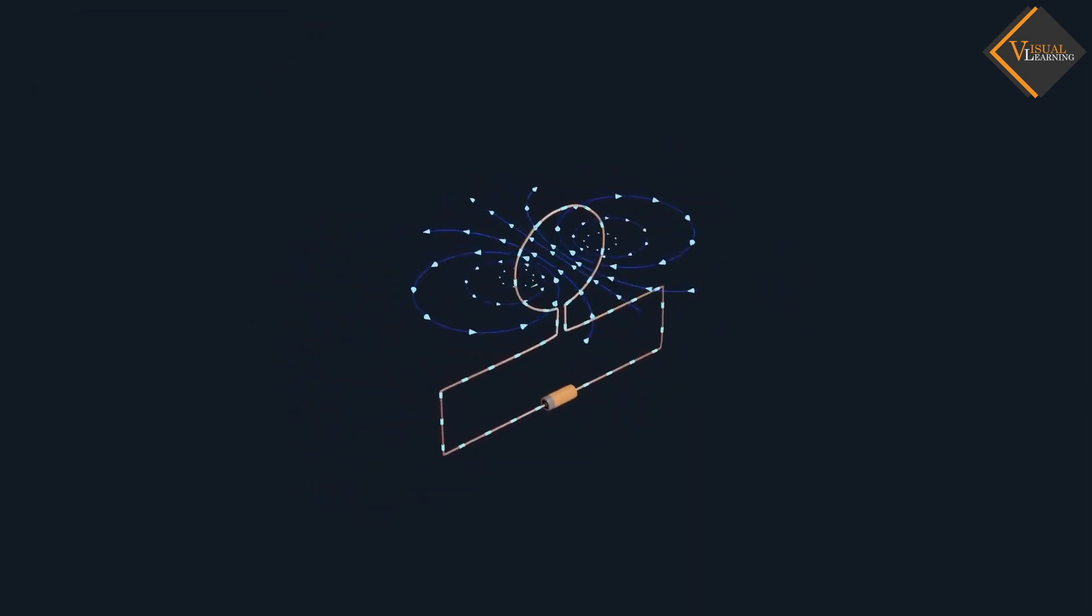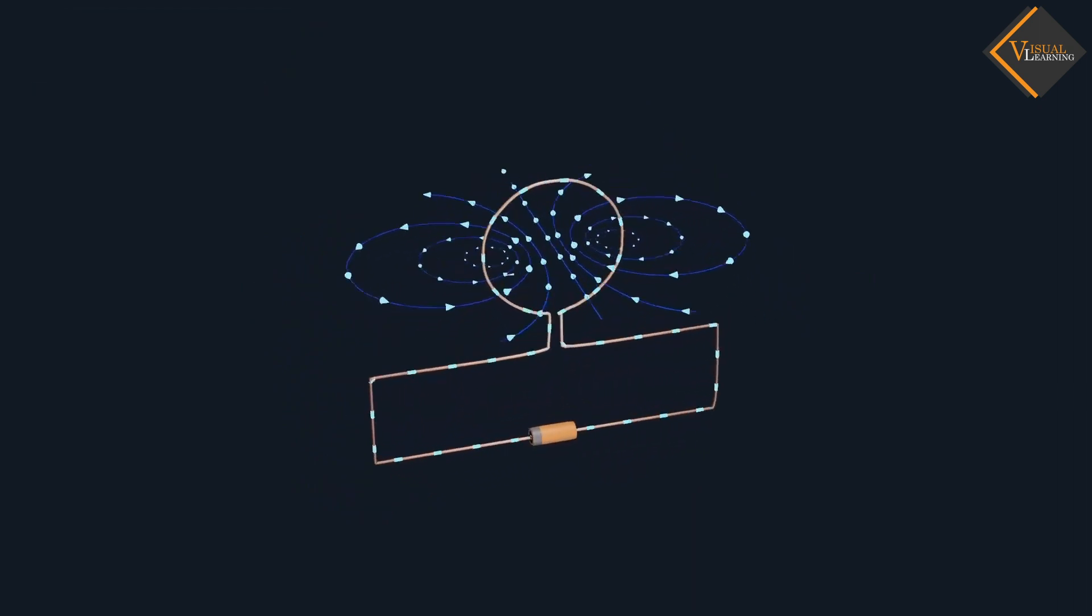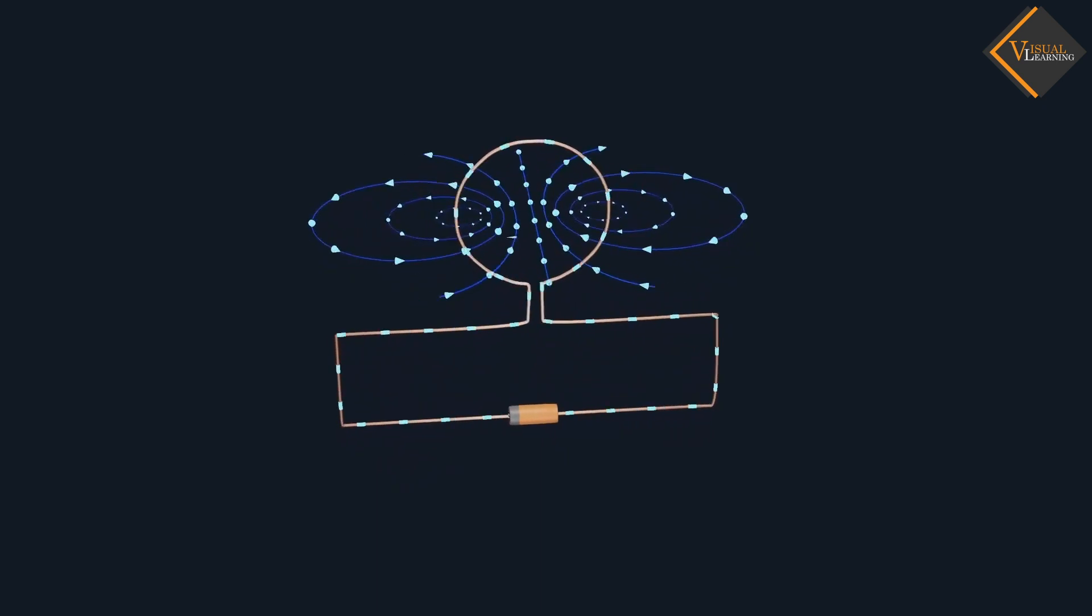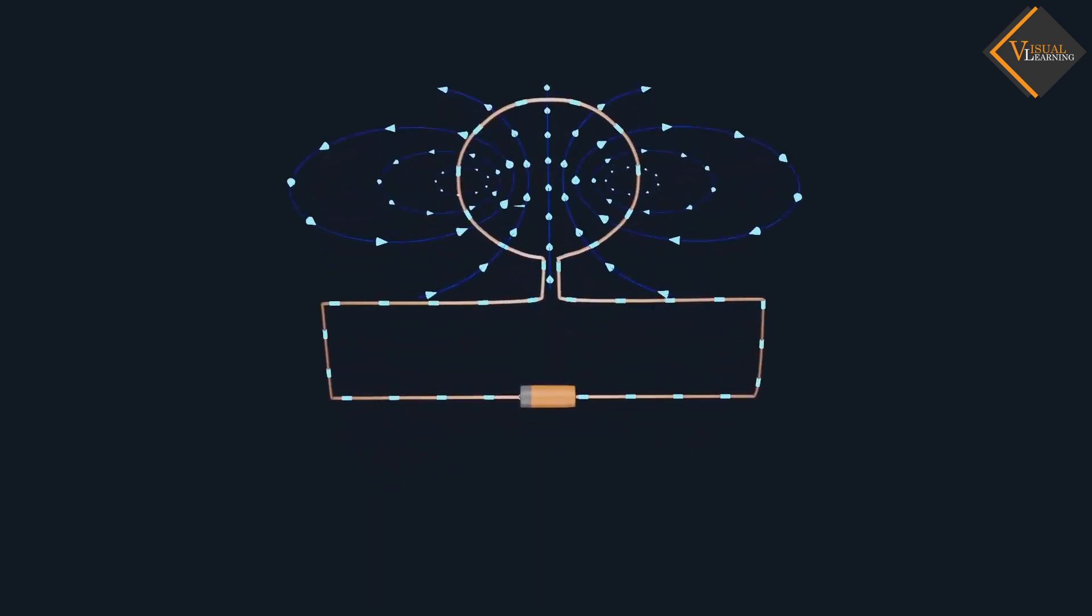We know that when current passes through a circular coil, magnetic field is produced and this coil acts like a tiny magnet.